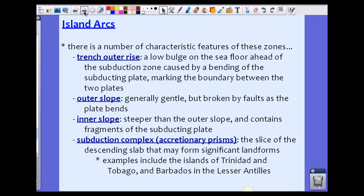There are a lot of characteristic features about island arcs and these zones. We see something called a trench outer rise, which is a bulge in the seafloor ahead of the subduction zone that usually marks the boundary between the two plates. This is really where we're going to see the boundary between the plates.